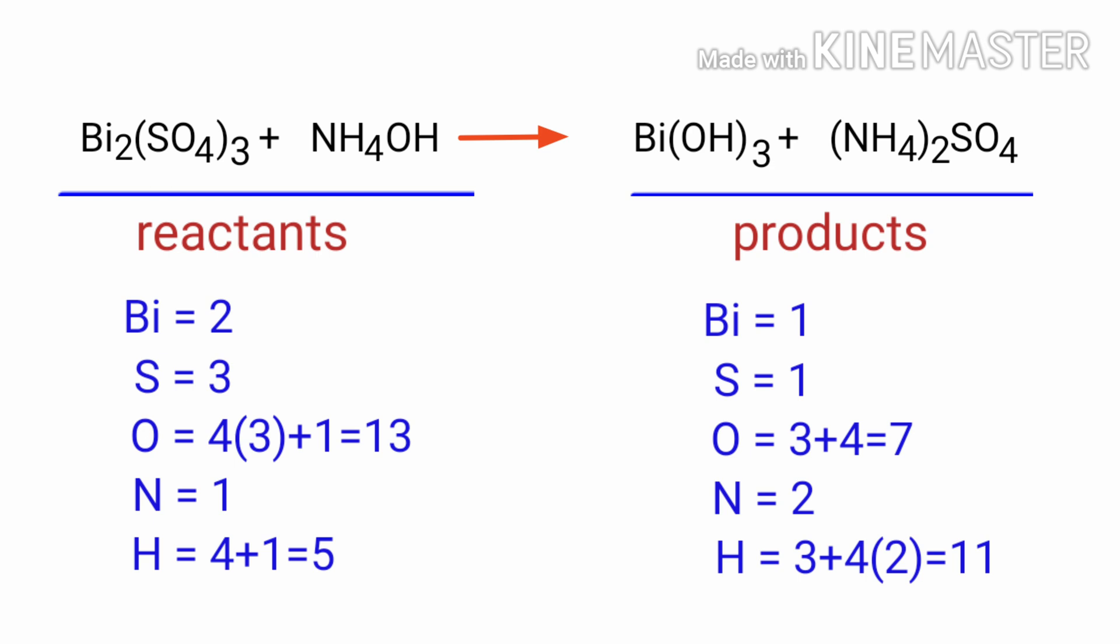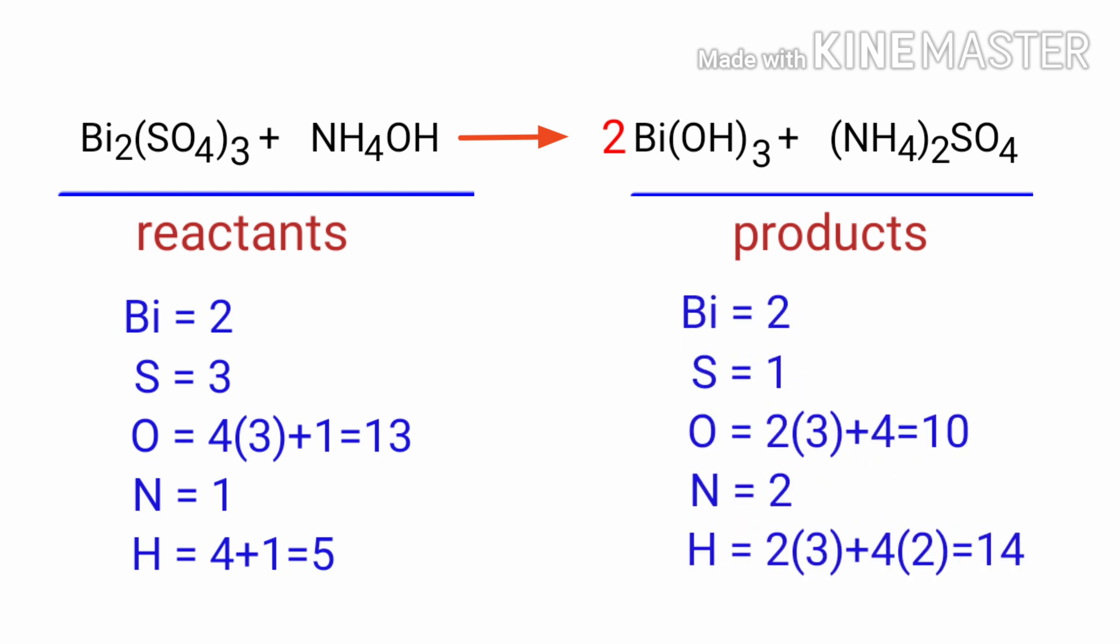In this equation we need to balance the bismuth atoms first. To do this we need to put a coefficient of 2 in front of Bi(OH)₃. The bismuth atoms are balanced.